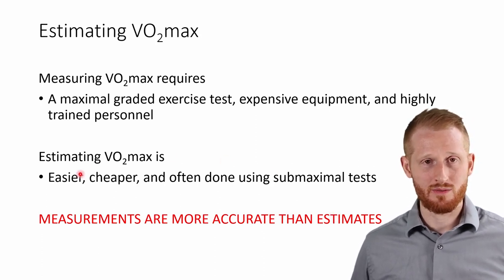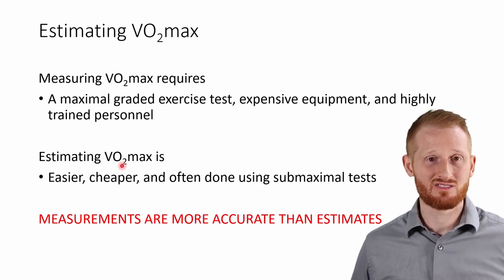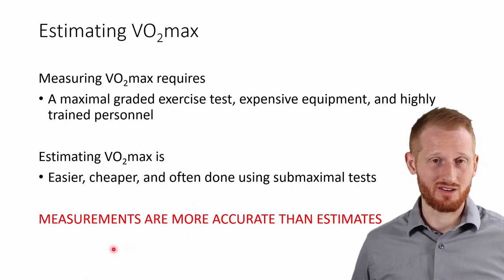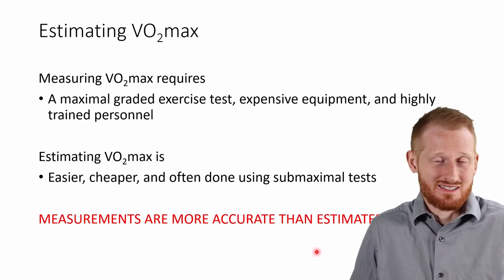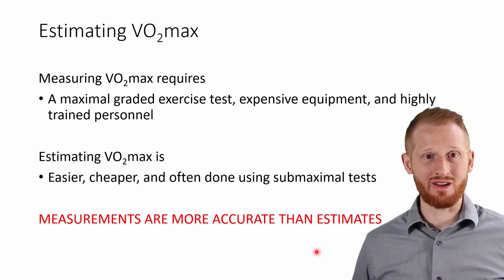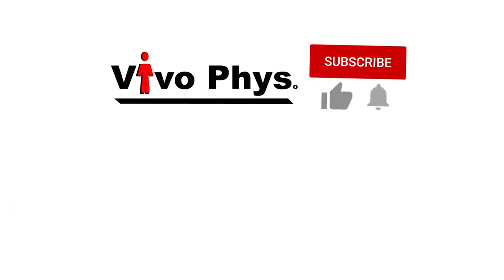In those cases, an estimated VO2 max is used — it's easier, cheaper, and often done with submaximal tests, making it safer. Estimated VO2 maxes are actually much more common than measured ones, though measurements are more accurate since estimates introduce additional error. Beyond just finding maximum oxygen consumption, VO2 max testing is also done to examine the RER (respiratory exchange ratio), which reveals how much carbohydrate versus fat is being used as fuel — the topic of the next video in this series.